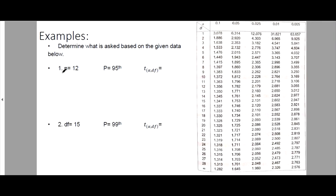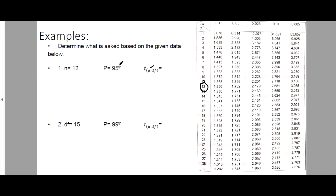Determine what is asked based on the given data below. We are given N equals 12, and the percentile is the 95th percentile. So we are going to find that T value. Since we are given the 95th percentile, to find alpha, all we need to do is convert it: 95th percentile is 0.95 — just divide by 100. So our alpha is found using 1 minus 0.95, therefore our alpha is 0.05.